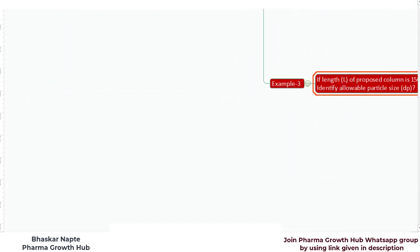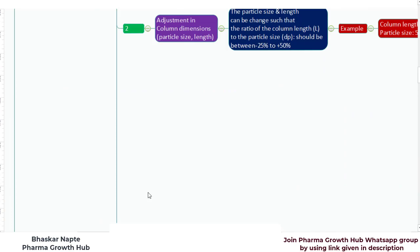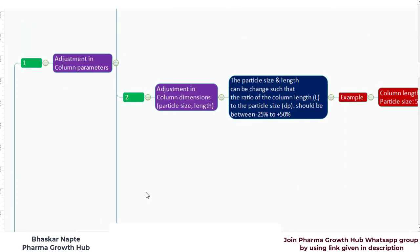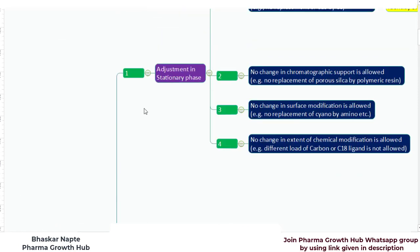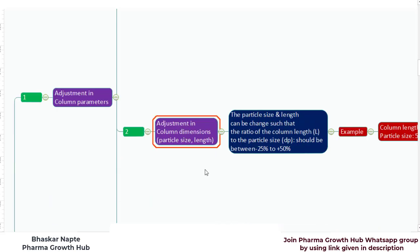I hope you now understand the adjustments in two important column parameters — stationary phase and column dimensions (particle size and length). Pharma Growth Hub is available for you to learn many such topics in a simple way. If you are interested in joining, there is a WhatsApp link provided in the description below. Click on the link and join the Pharma Growth Hub platform. Thank you so much.